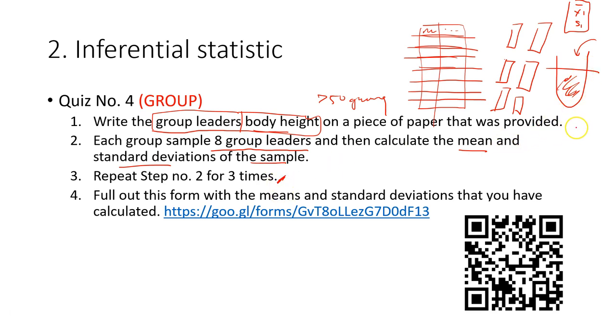So you do it again, so mean two. You just put the sample back to the basket and then mix it well and then take another eight students. Then after that for the second sample, it's the same thing. You calculate the second mean and also the second standard deviation.